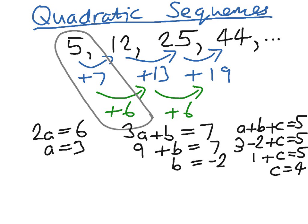The reason we have all these letters, a, b, and c, is because the general form of the nth term of a quadratic sequence is an² plus bn plus c. We've worked out a to be 3, so that is 3n², b is negative 2, so minus 2n, and c is 4, plus 4.